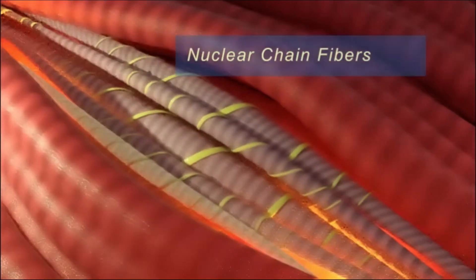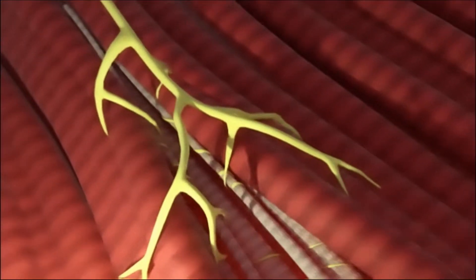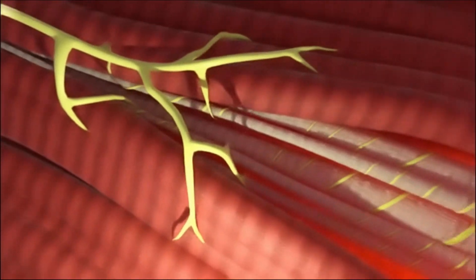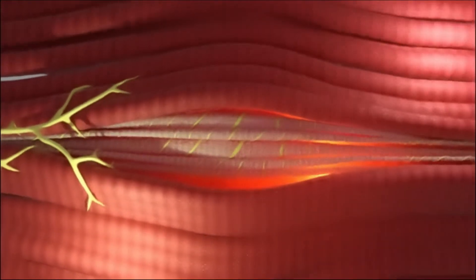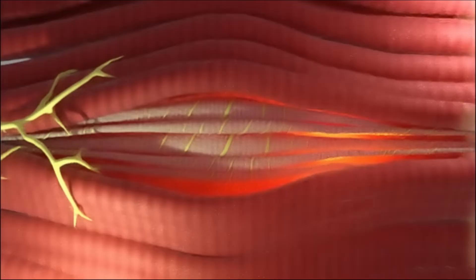and around five nuclear chain fibers. As action potentials reach the muscle via alpha motor neurons, the surrounding extrafusal fibers contract or relax, stretching the muscle spindle along with them.